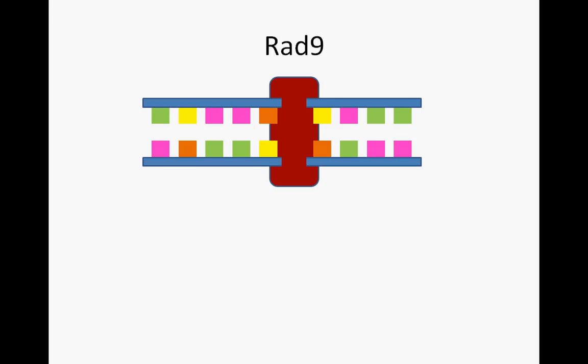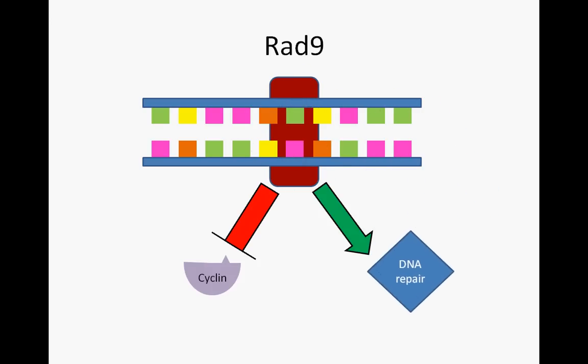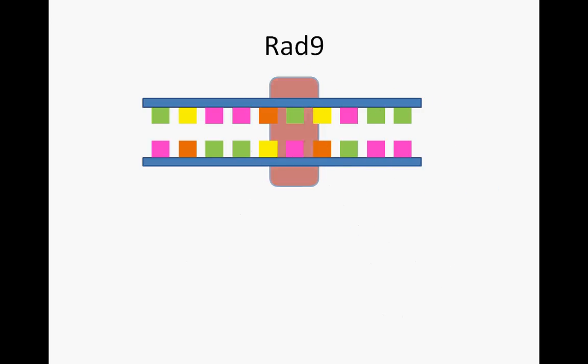In particular, these proteins repress cyclin expression and encourage expression of DNA damage repair proteins. When the damage has been repaired, the cell is free to move on in the cell cycle.